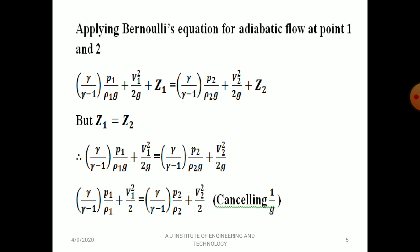The Bernoulli equation for adiabatic process is: γ/(γ−1) · P1/(ρ1·g) + V1²/(2g) + z1 = γ/(γ−1) · P2/(ρ2·g) + V2²/(2g) + z2. Since z1 = z2 (no datum difference), the equation simplifies to: γ/(γ−1) · P1/(ρ1·g) + V1²/(2g) = γ/(γ−1) · P2/(ρ2·g) + V2²/(2g). Cancelling the g terms gives: γ/(γ−1) · P1/ρ1 + V1²/2 = γ/(γ−1) · P2/ρ2 + V2²/2.